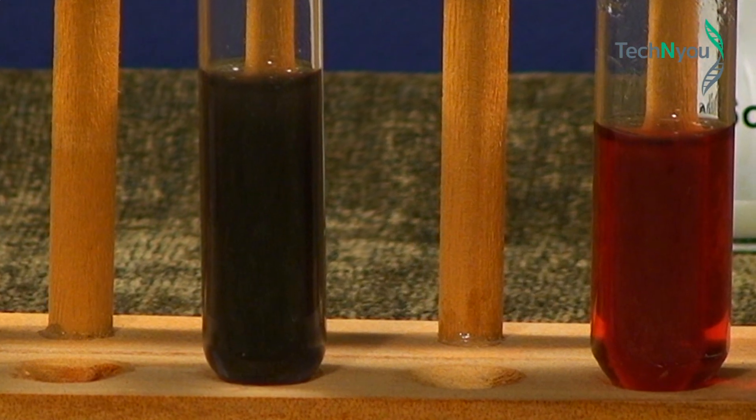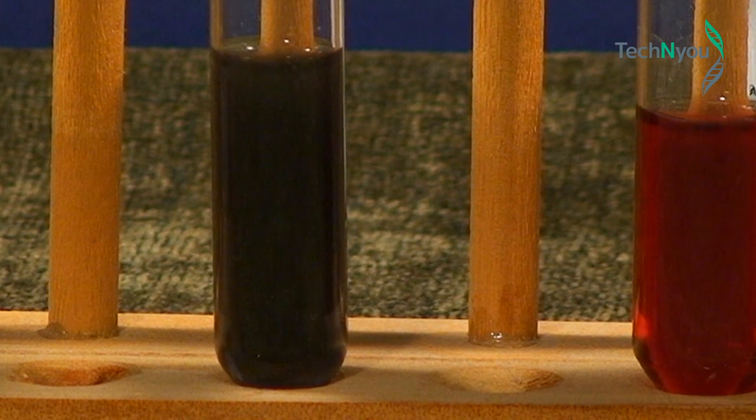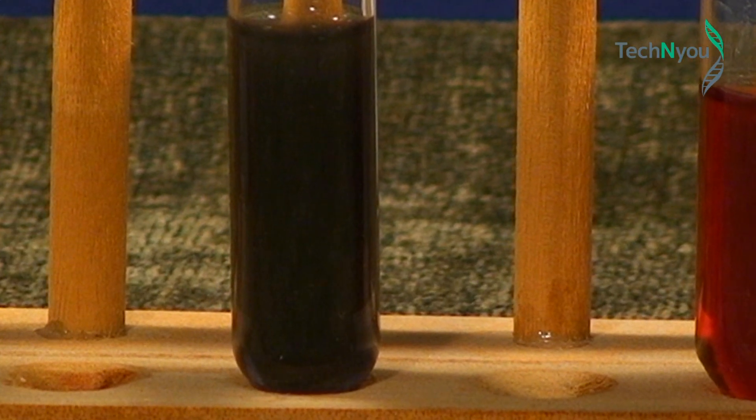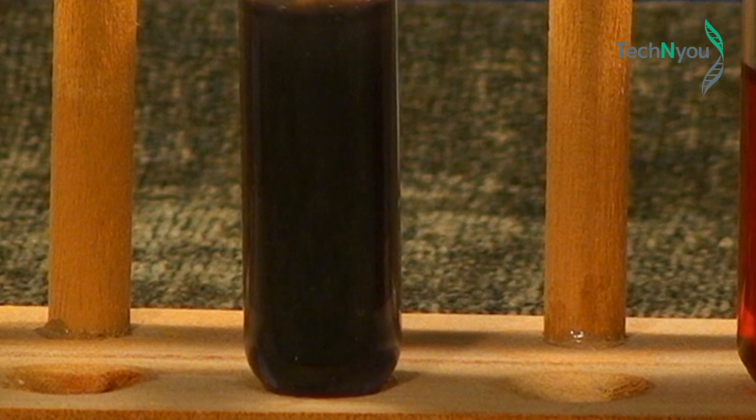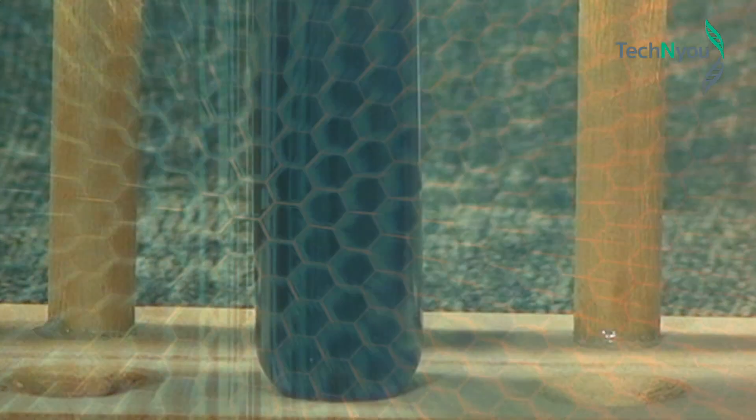What we now see is a darker solution in the left-hand test tube. By adding sodium chloride to the original gold nanoparticles, we've caused the particles to increase in size, which affects the way they reflect light and therefore changes their observed color.